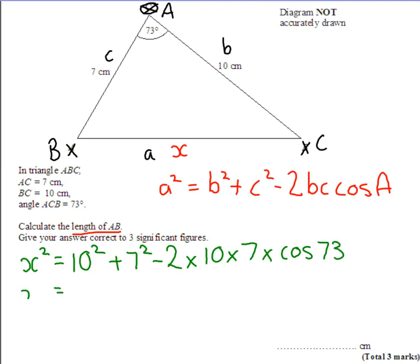So X squared equals 10 squared plus 7 squared is 149. Do that part first. And then I'm going to take away 2 times 10 times 7 times cosine 73. So if you put that into a calculator, it gives you 40.9.